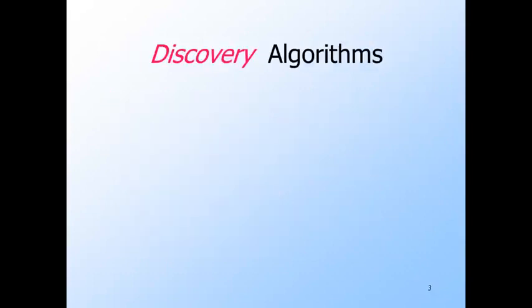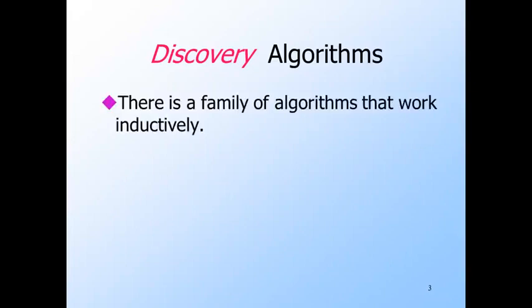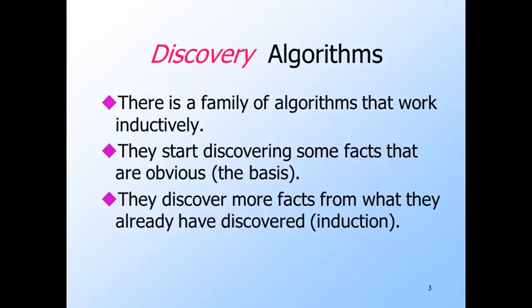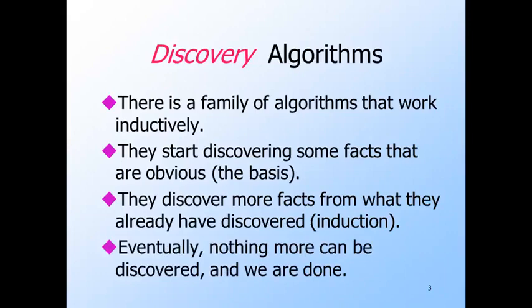Almost all the algorithms we need to simplify grammars are based on the same principle, which I call discovery algorithms. These discover facts by an induction process. The basis is always certain facts that are obvious. Then, based on what is already known, we discover more facts in repeated rounds. Finally, at some round, we can discover no more facts. There's no point in going on, since without new facts at the current round, we cannot discover more on the next round. We generally have to prove only that any true fact of the type we are trying to discover will be found this way.